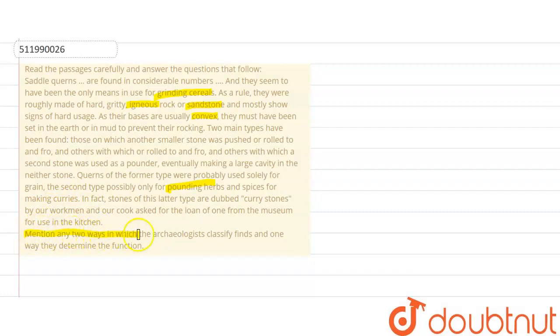Mention any two ways in which the archaeologists classify finds and one way they determine their function. So therefore, you have to explain what kind of characteristics and the use for the coins, the same type of coins is used in these ways.